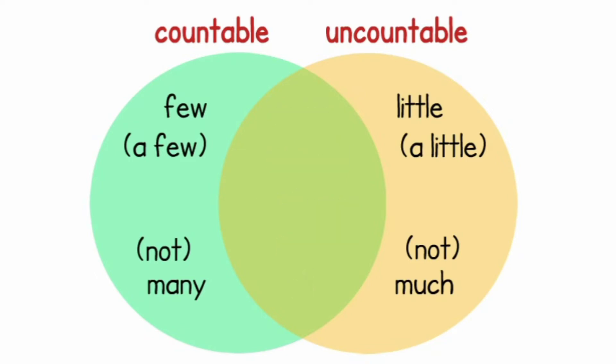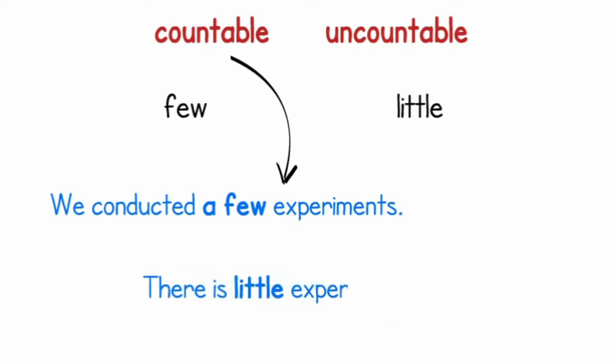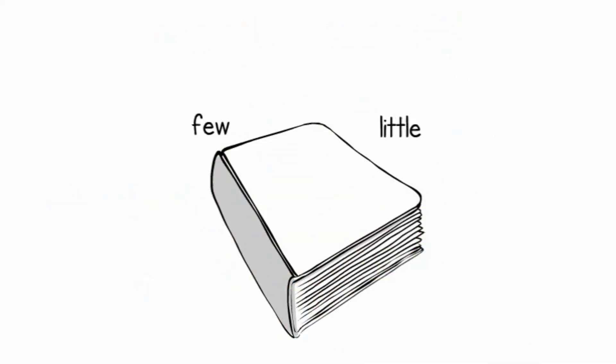Notice the difference. Few is used with countable, but little is used for uncountables. For example, we conducted a few experiments, but there is little experimentation in this area. There are many other quantifiers in English that you can use, so be sure to check a good grammar book.